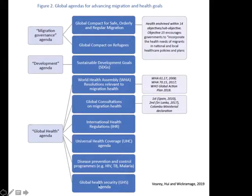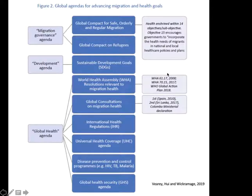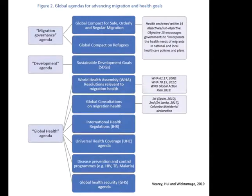For example, the global health agenda — whether looking at global health security through to universal health care coverage, or World Health Assembly resolutions specific to the health needs of refugee and migrant populations — links directly into the sustainable development goals. When thinking about universal health coverage, where does migration fit? Are we ensuring no one is left behind, or are we leaving certain groups behind on the basis of their nationality, citizenship status, or documentation status?